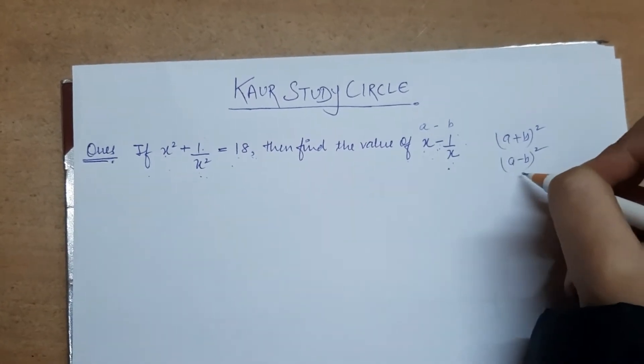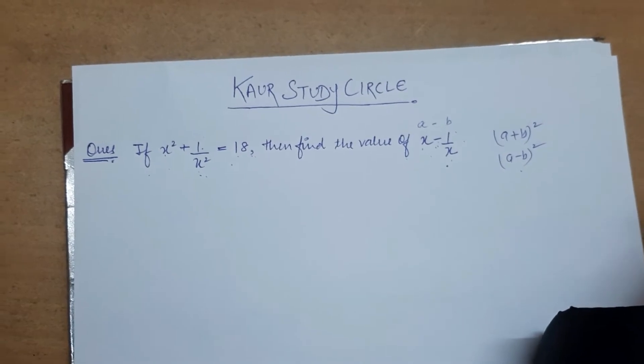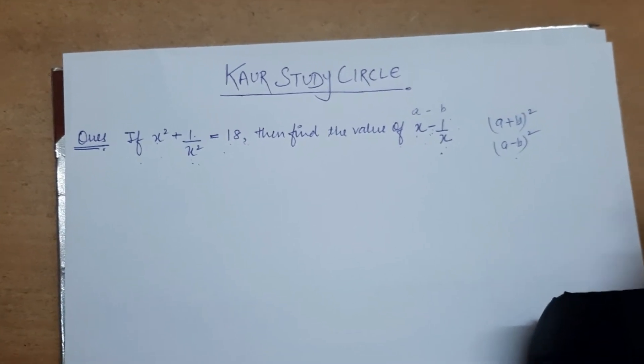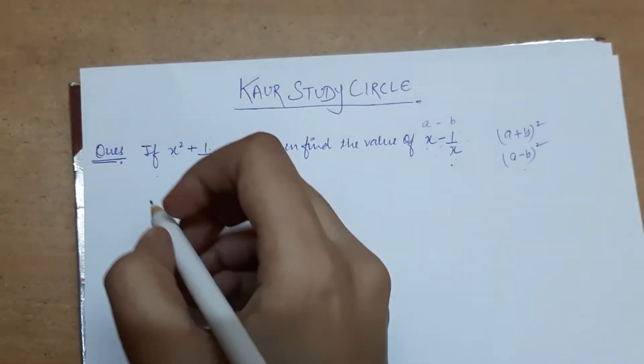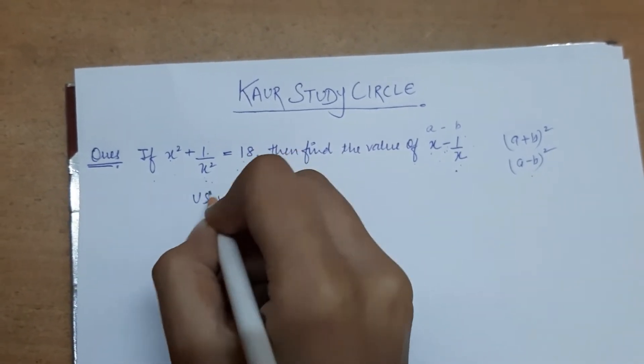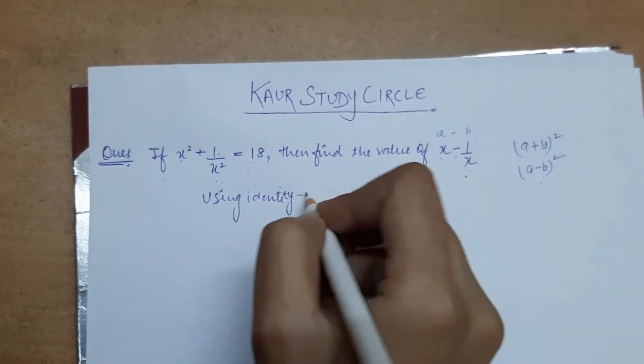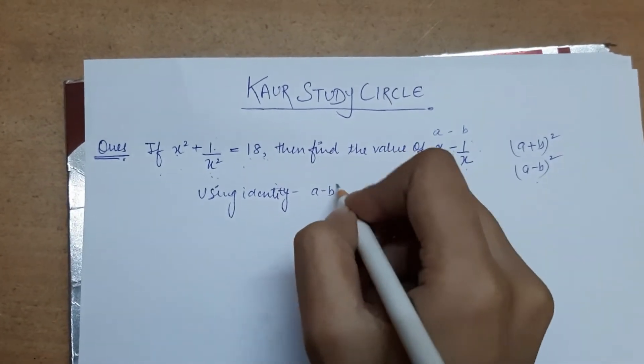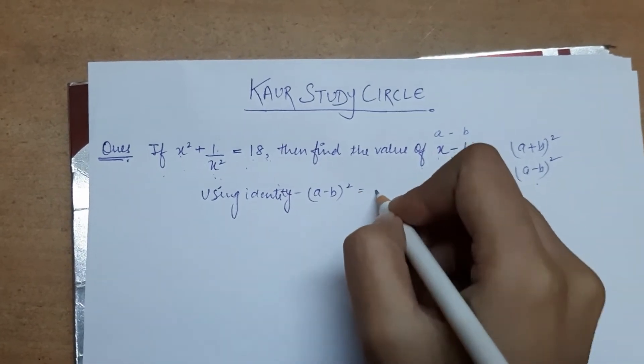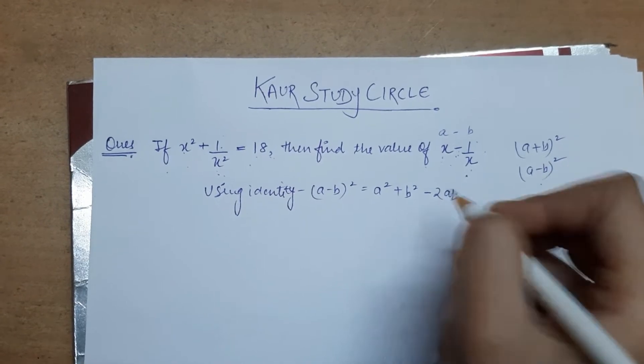Great, let's go ahead and find out the value of x minus 1 by x by using the identity a minus b whole square. Okay, so first we will use the identity which is: a minus b whole square is equals to a² plus b² minus 2ab.